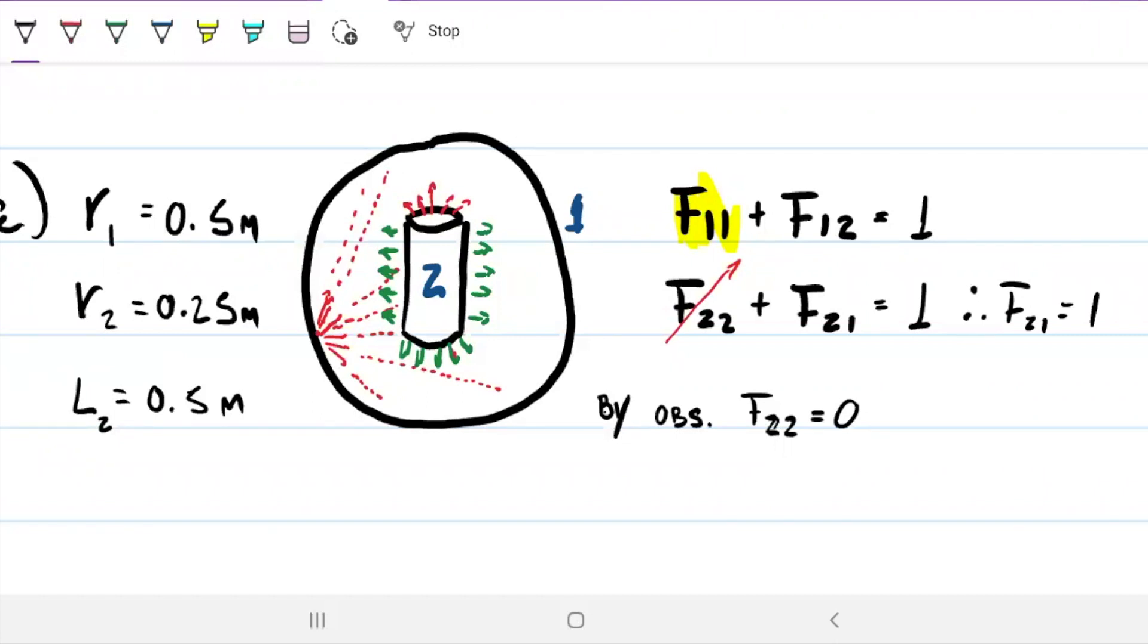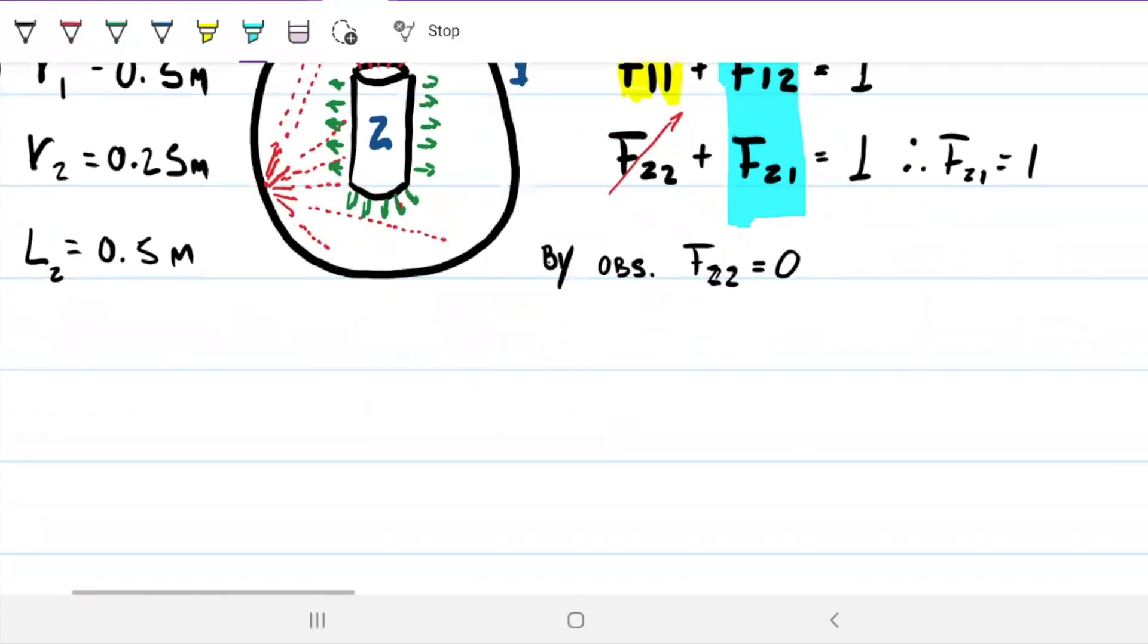Now we can use reciprocity. We can combine these two guys through reciprocity, and then we can solve for that. And when we solve for that, then we can solve for F11. What does reciprocity say? It says that F12 times the area of 1 has to equal F21 times the area of 2. F21 is 1, so F12 equals area of 2 divided by area of 1.